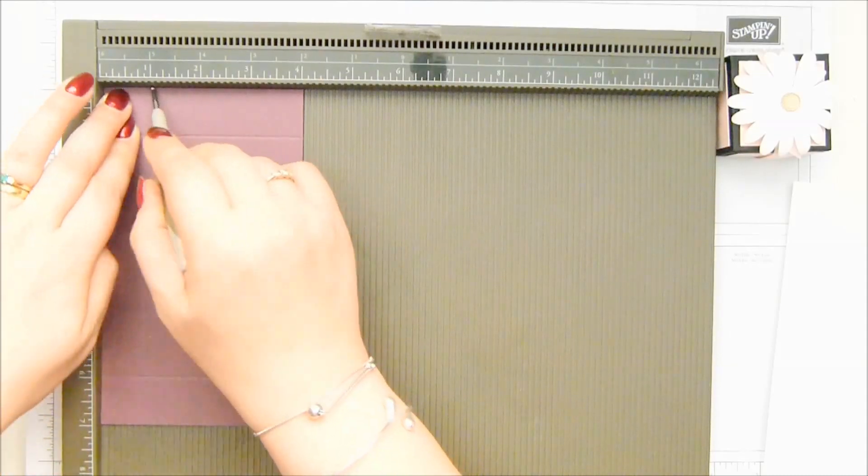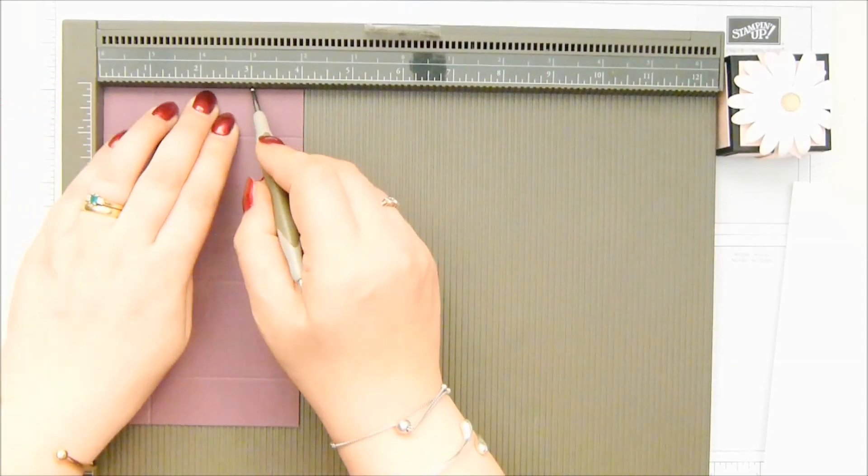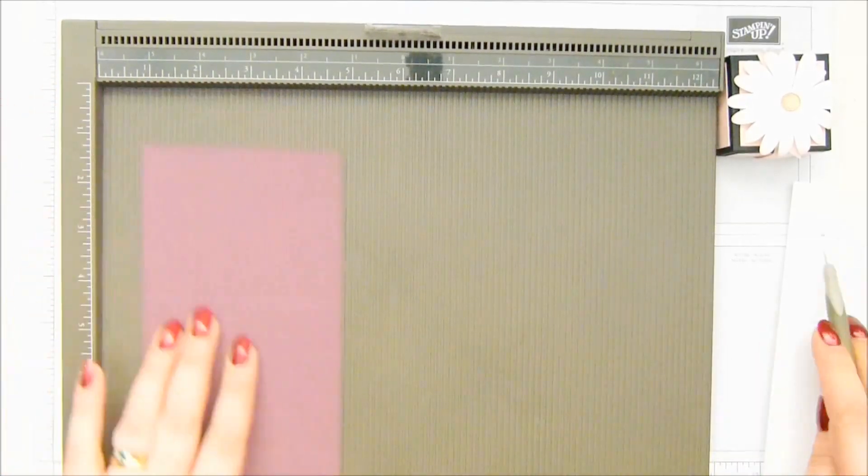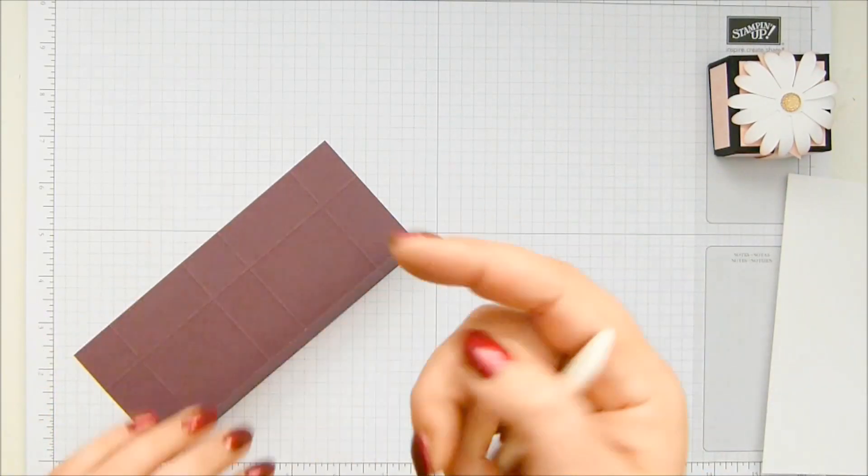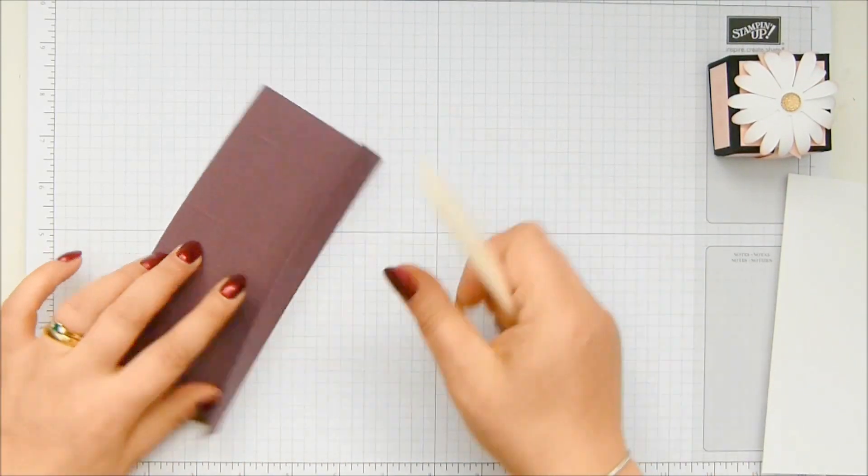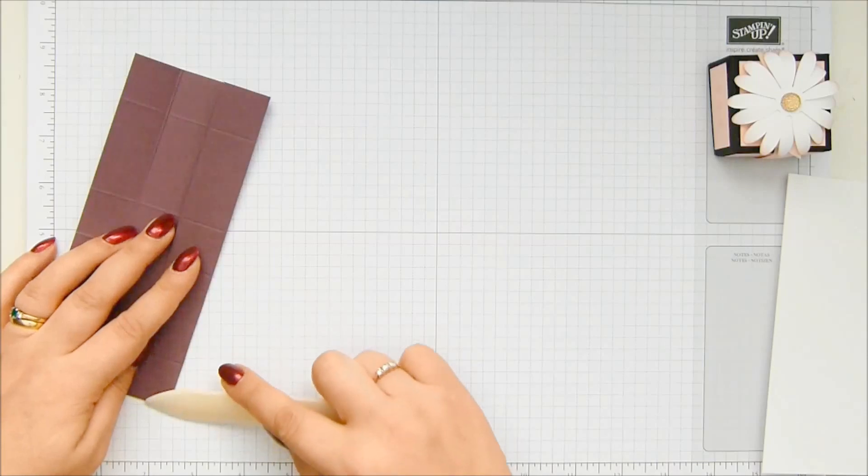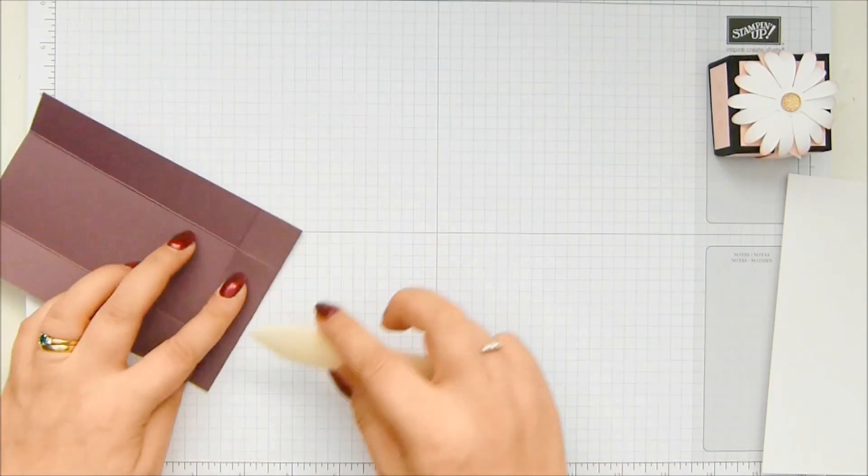Then turn it round and score it at one and three inches, which is two and a half and seven and a half centimetres. Okay, so bring that back round again. So, burnish your score lines.